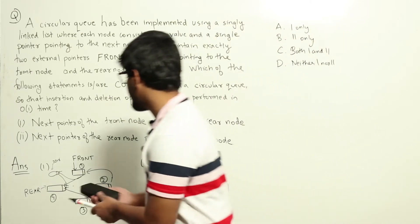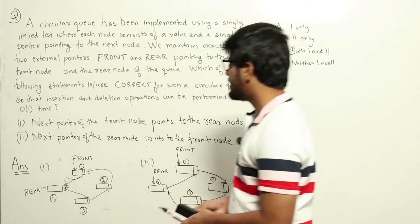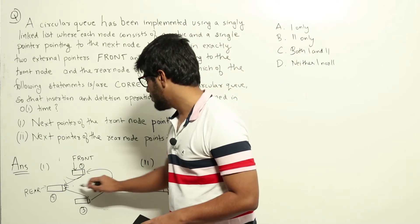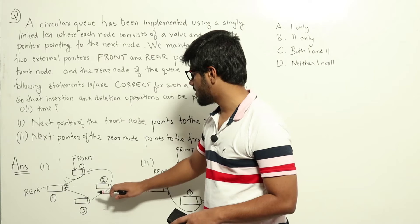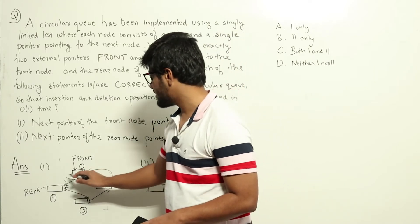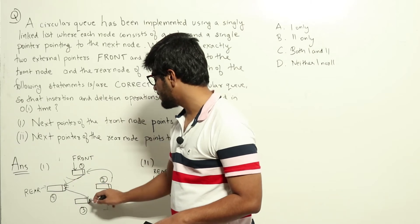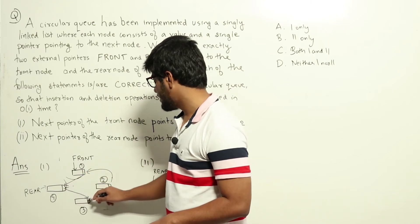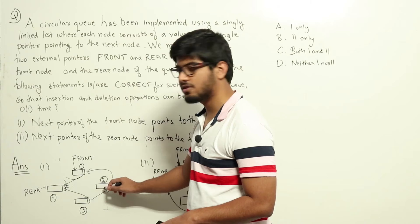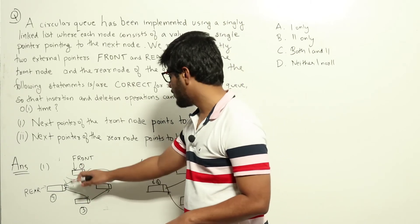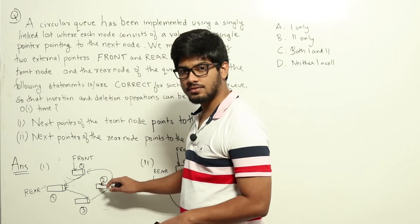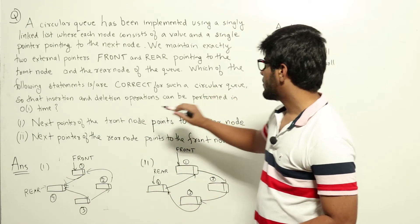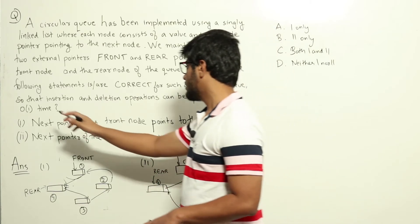Now let us try deleting. Deletions should happen from the front node. We should delete the front node, make the next node the new front, and then point the rear to that new front. However, in the current front node, only the address of the rear is stored. To reach the address of node two, we have to go from front to rear and traverse around. There is no way to directly get that address, so deletion cannot be done in O(1) time. Statement 1 does not satisfy the criteria.